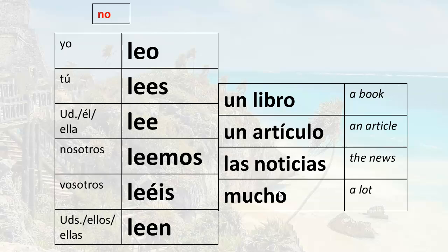Remember that if you want to negate, you insert no between the subject pronoun and the conjugated verb. So yo leo — I read. I don't read — yo no leo. Tú lees — you read. You don't read — tú no lees. Él lee — he reads. Él no lee — he doesn't read. And that's the gist of it.